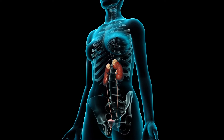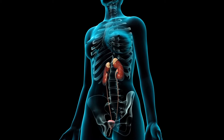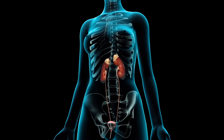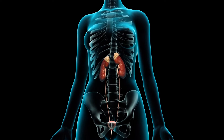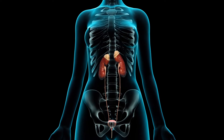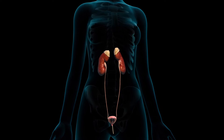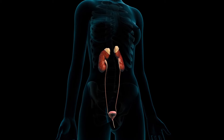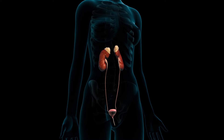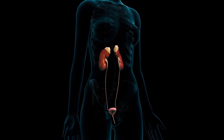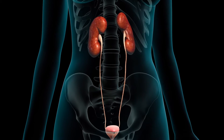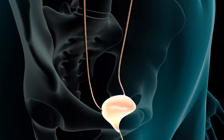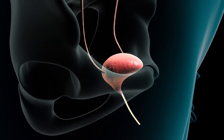Your doctor will perform a cystoscopy to diagnose conditions of your urinary tract. Your urinary system, or urinary tract, produces urine and excretes it from the body. It includes the kidneys, ureters, bladder and urethra.